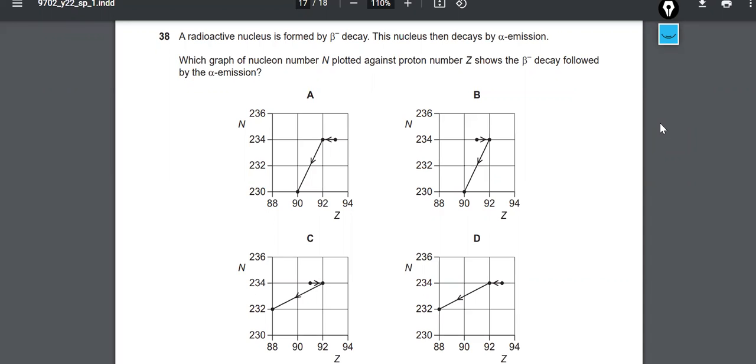The first one, question 38 here reads: a radioactive nucleus is formed by beta minus decay. This nucleus then decays by alpha emission. Which graph of nucleon number N plotted against proton number Z shows the beta minus decay followed by the alpha emission?